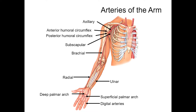Here we have the arteries of the arm: the subclavian becoming the axillary, the axillary branching into the subscapular, the subscapular branching into the anterior humeral circumflex, a little further down into the posterior humeral circumflex, becoming the brachial. Down past this branch we have the radial and the ulnar, and in the hand we have deep palmar arches and superficial palmar arches, and at the fingers we have digital arteries.